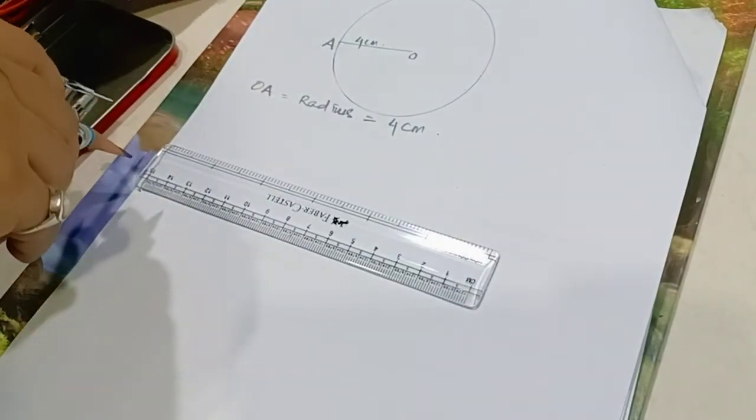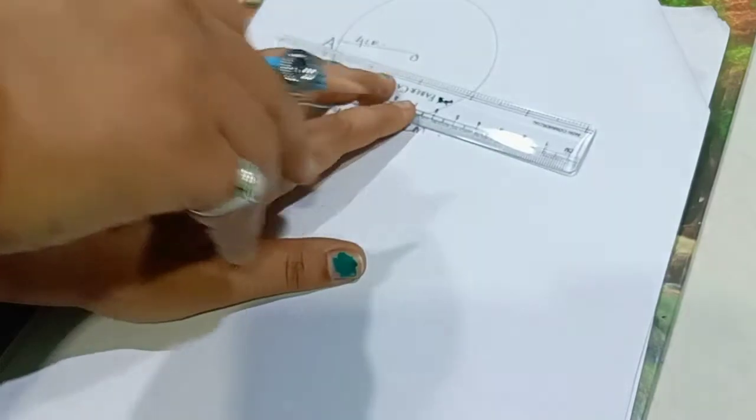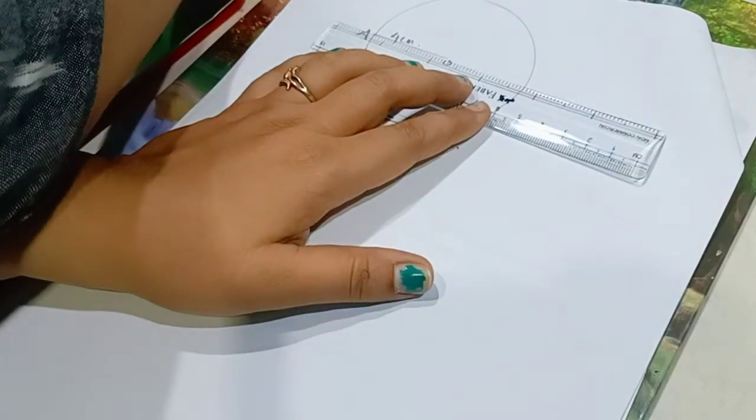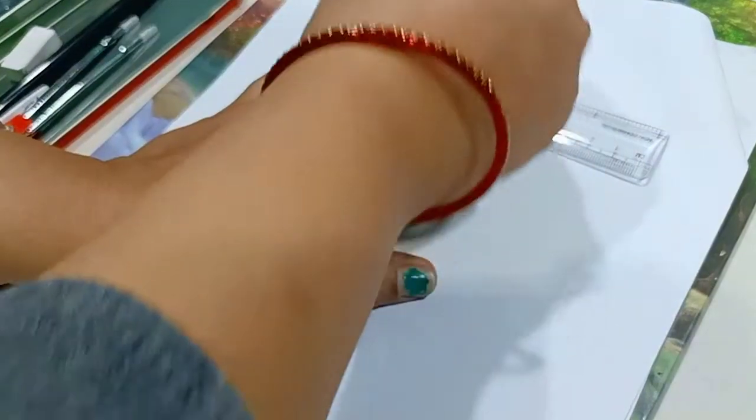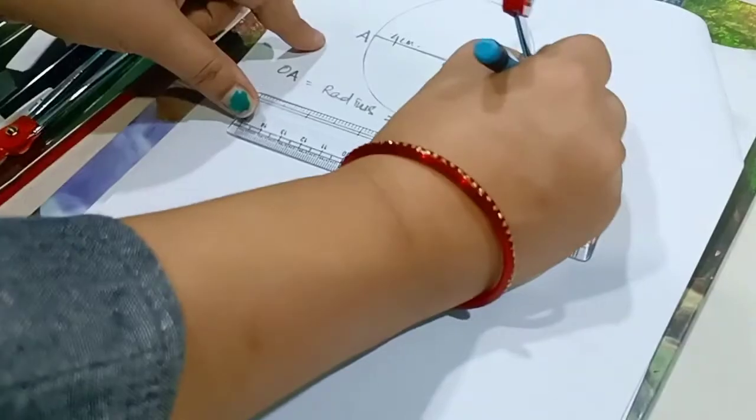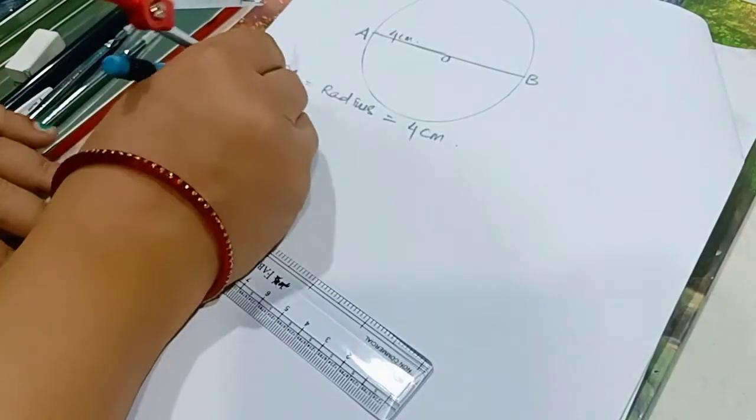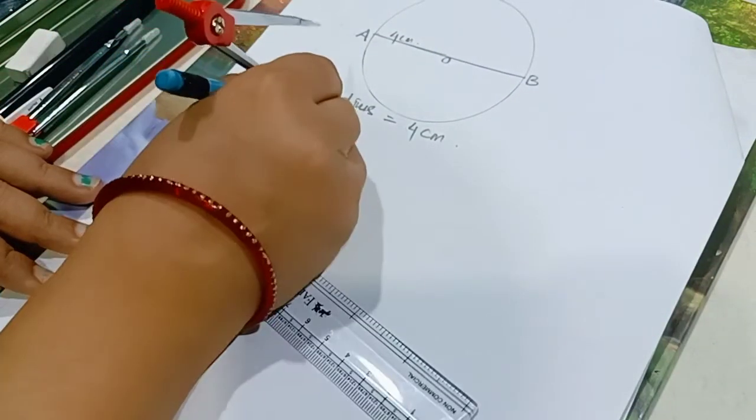Draw any two of its diameters. Now join the ends of these diameters. Join this line starting from A to this end of the circle, the AB. Now AB is the diameter. AB is the diameter.